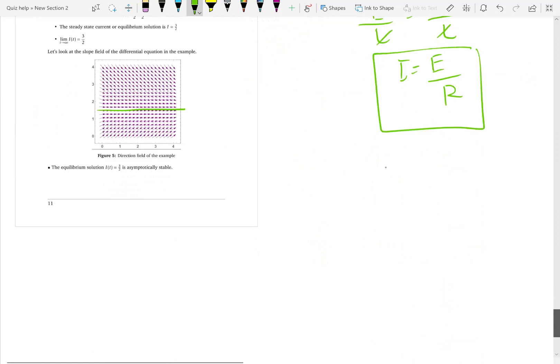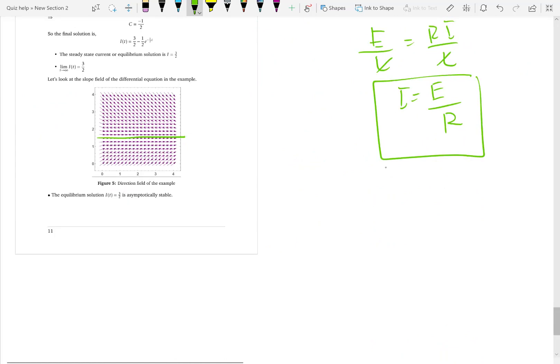So, how should the slope look like? At 3 over 2, you should have horizontal slopes. If you have a current in the beginning of the circuit, in the beginning of the time in the circuit where it is higher than 3 over 2, the current will decay and it will approach to 3 over 2 and will not change anymore.